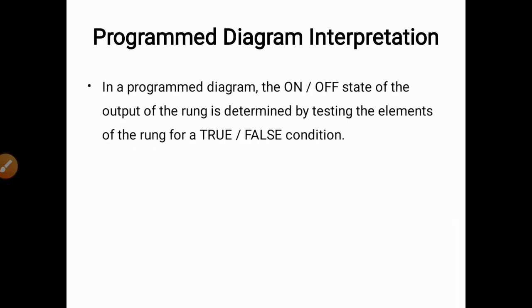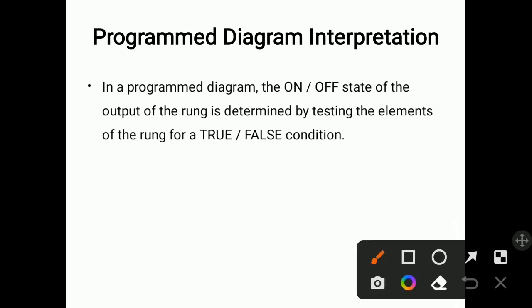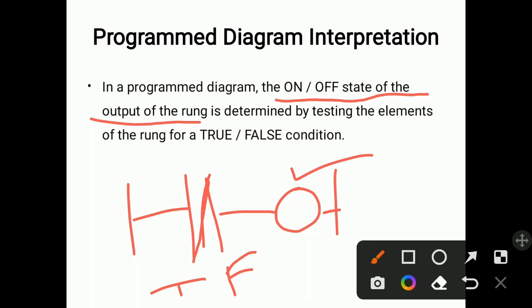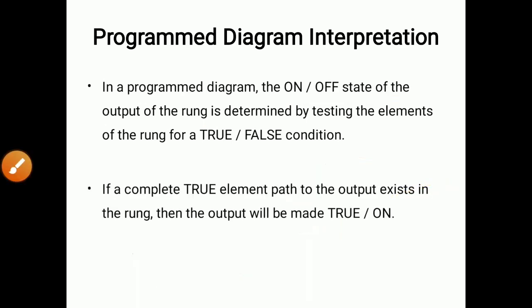In a program diagram interpretation, the on/off state of the output of the rung is determined by testing the elements of the rung for a true or false condition. Suppose a rung has one input switch and one output. Whether that switch is true or false determines whether the output will be on or off. If a complete true element path to the output exists in the rung, then the output will be made true or on.